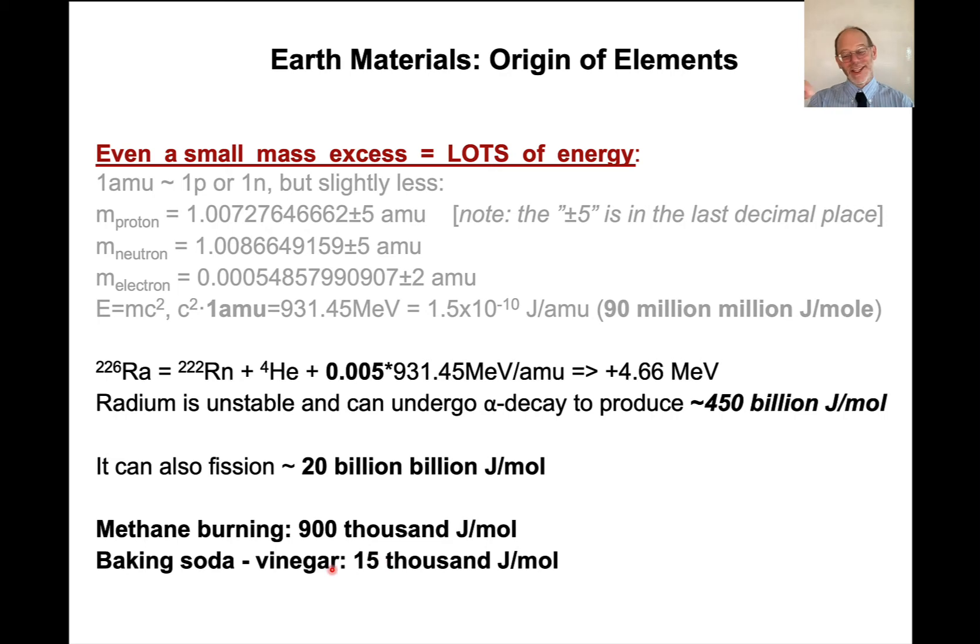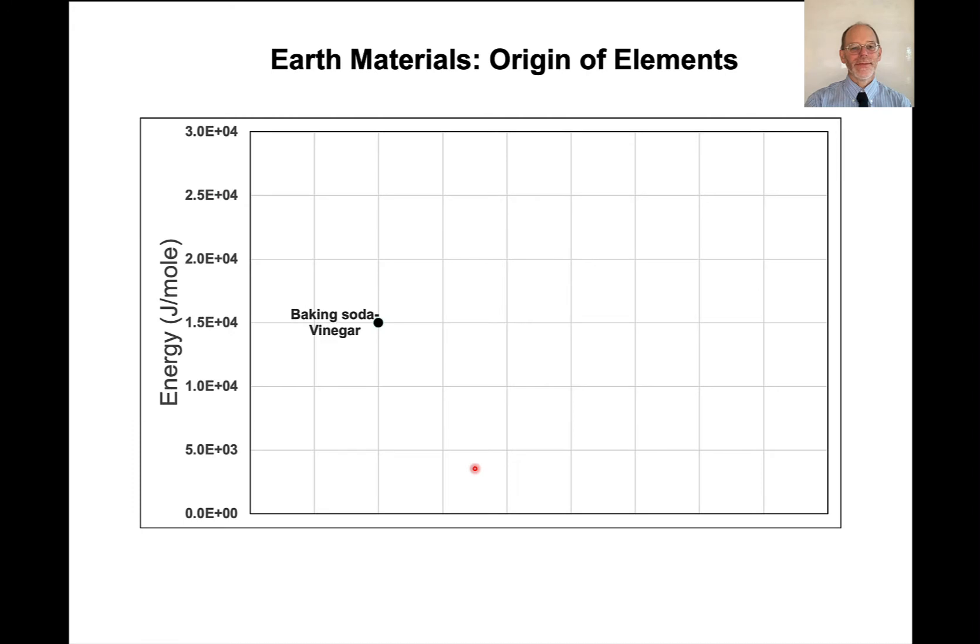And put this in context, baking soda and vinegar, you add vinegar to baking soda and it reacts. That's 15,000 joules per mole. And methane burning, this is how we power our society for the most part, is 900,000 joules per mole. Okay, so these are hundreds of thousands. And here we're talking billions and billions and billions of joules per mole.